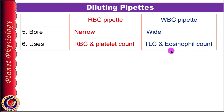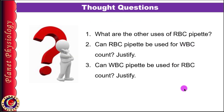In general, whenever the cell count is higher, you need a higher dilution and therefore the RBC pipette is used. For a lower cell count, the WBC pipette is used. Now, a few questions for you as homework: What are the other uses of the RBC pipette? Can you use the RBC pipette for WBC count or the WBC pipette for RBC count? Justify your answers and post them in the comment section below. That's all about this session.